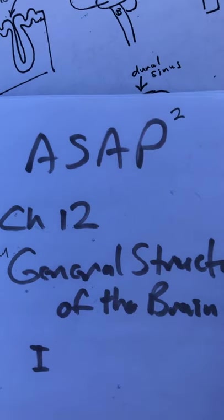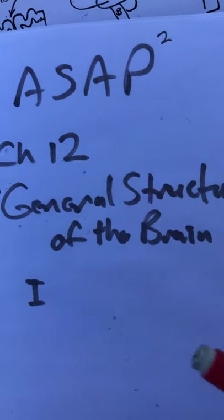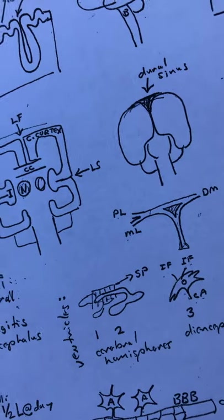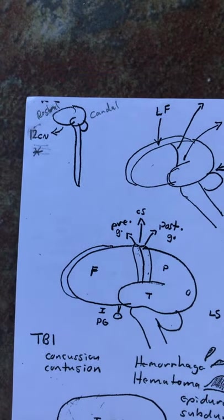Here we go again. This is as simple as possible A&P, Chapter 12, very general structure of the brain, part one. Using the graffiti pages that are available to you online and were handed out in class, here goes the information.